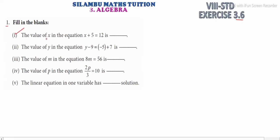The value of x in the equation x plus 5 equals 12. See, x plus 5 equals 12, we need x. So take the 5 to the right side as minus 5. Anyway, x is equal to 7.